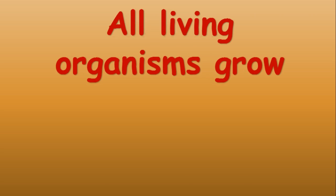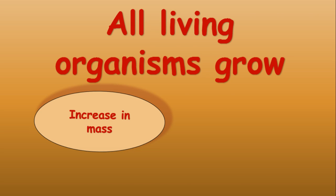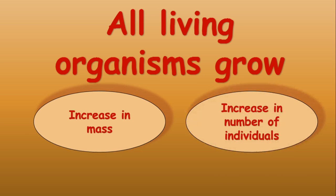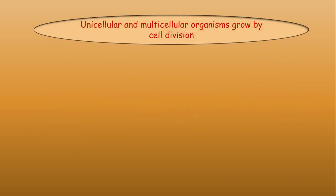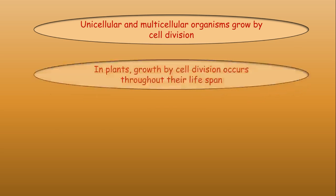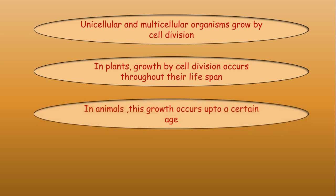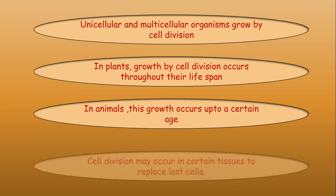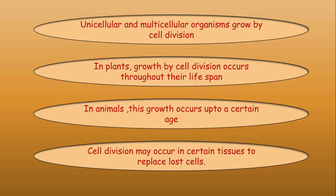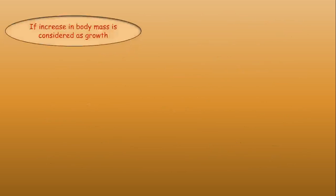The first characteristic of living organisms is growth. All living organisms grow, meaning there is an increase in mass and increase in the number of individuals. Unicellular and multicellular organisms grow by cell division. In plants, growth by cell division occurs throughout their lifespan, whereas in animals this growth occurs only after a certain age, but cell division may occur in certain tissues to replace lost cells.